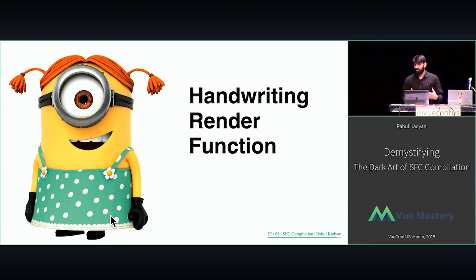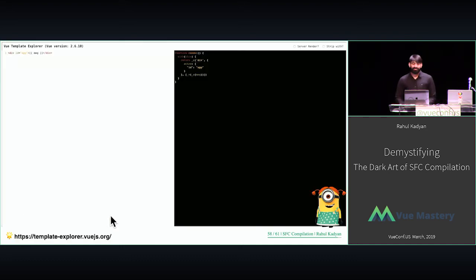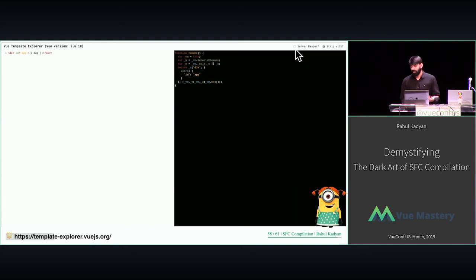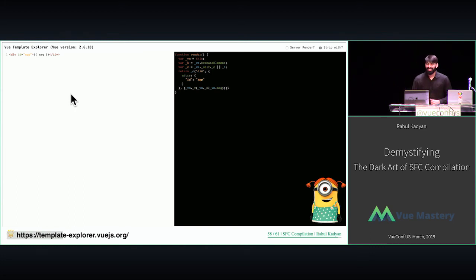If you are writing a render function yourself and want to know how to do something, you can write a similar template and put it in this website — template explorer at vue.gez.rz or similar. It gives you the corresponding render function, with options like server render and client-side rendering.